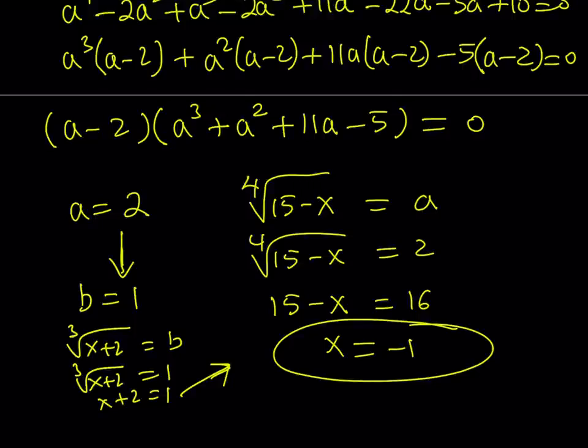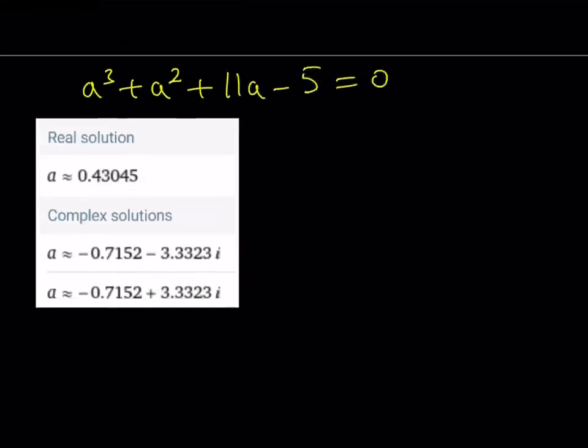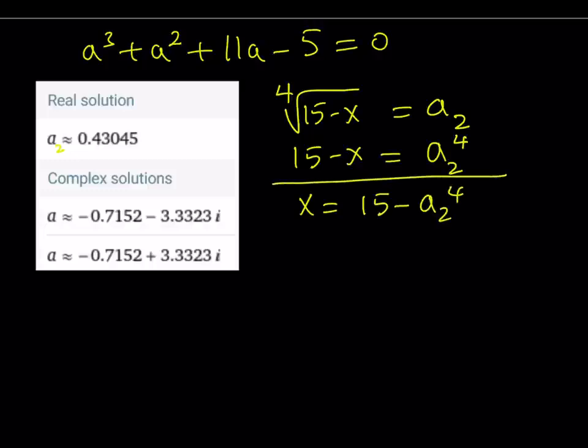So one of the solutions to this equation is x equals negative 1. Let's go ahead and take a look at the other solutions. So let's see what we got from here. So we got this solution. Well, we got one real solution. So from the quartic, let's call this a sub 2. So if you remember, the fourth root of 15 minus x is equal to a, but I called it a sub 2. If you raise both sides to the fourth power, it's going to be a2 to the fourth power. And from here, x is going to be 15 minus a2 to the fourth power. So that's going to be another real solution. And you can do the same thing with complex solutions.